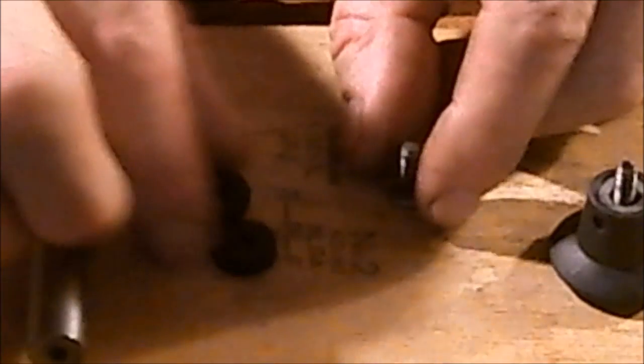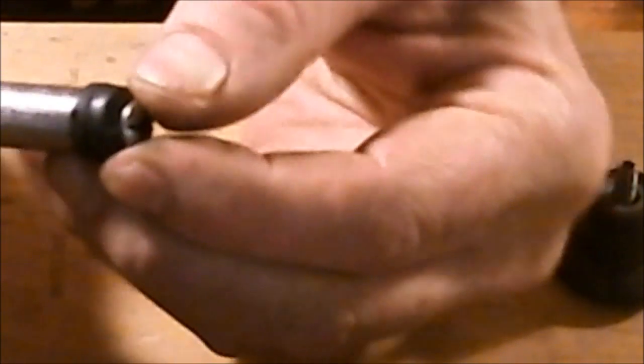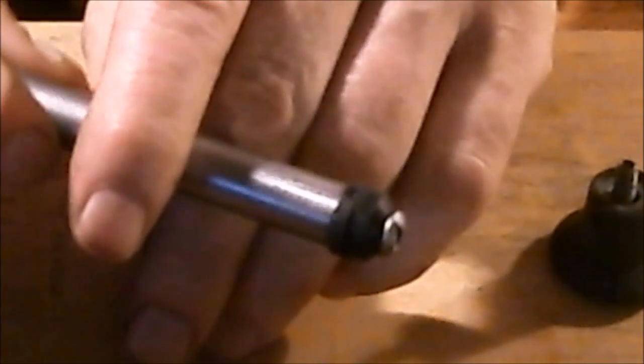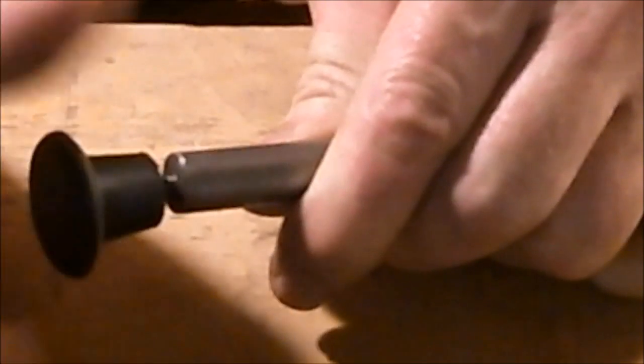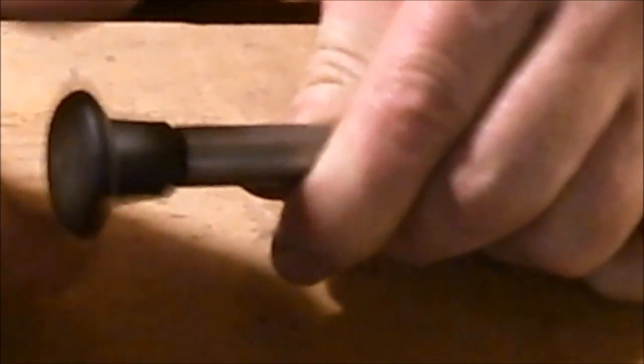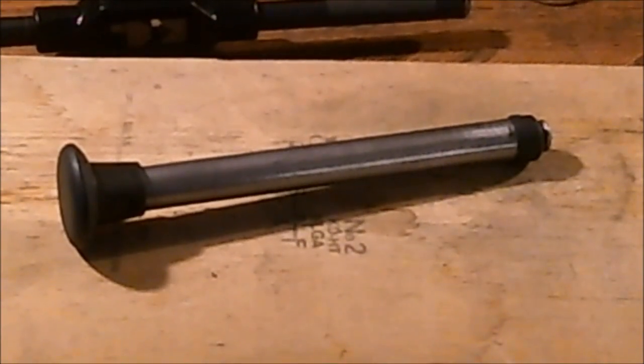Now stack your washers. You want to take the domed one and put it on the end of the screw and then the flat one behind it. Then thread your screw into your steel piston and put your knob on the other side. It should look like this when you're done.